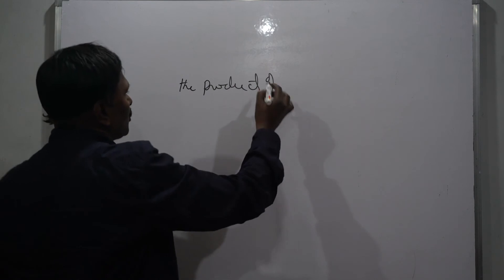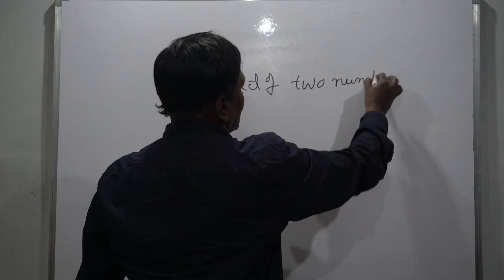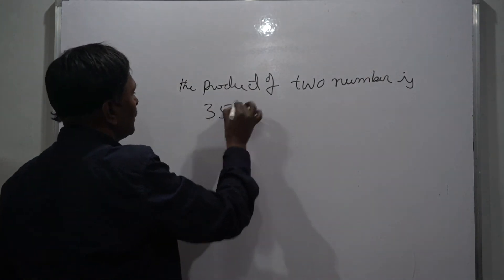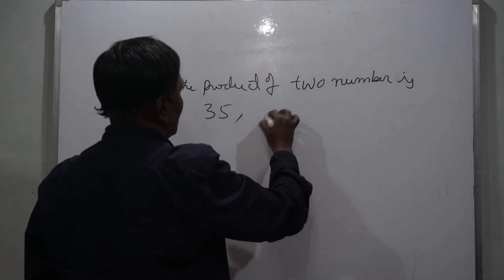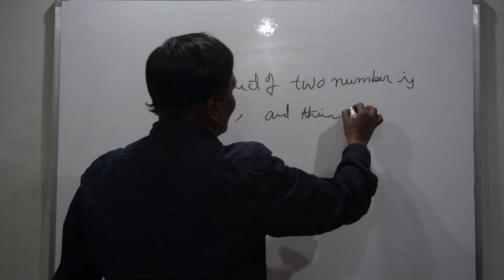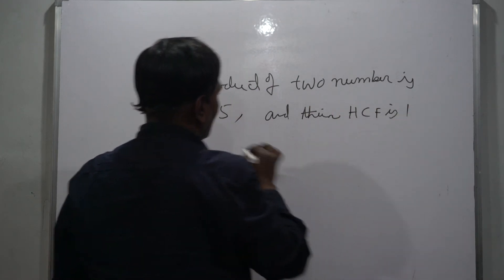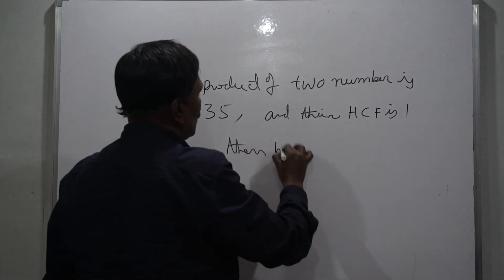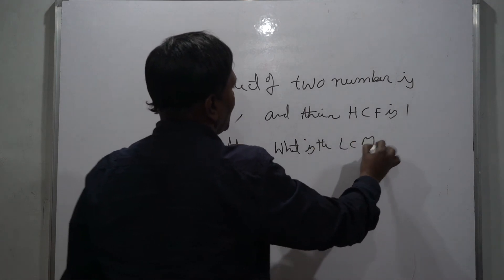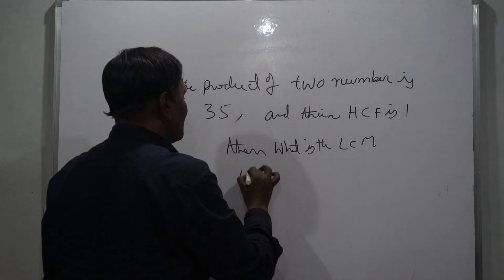The product of two numbers is 35 and their HCF is 1. Then what is the LCM? With the help of same example, LCM is equal to a into b by HCF.